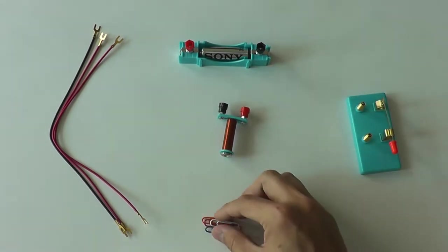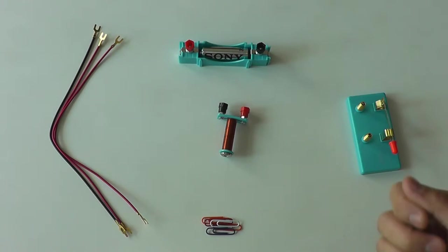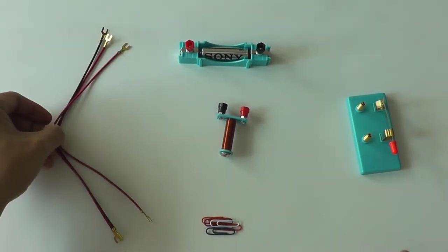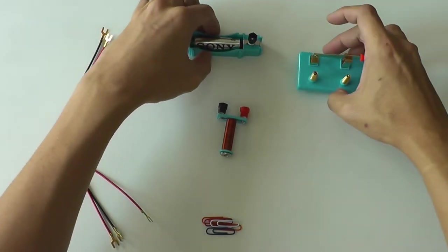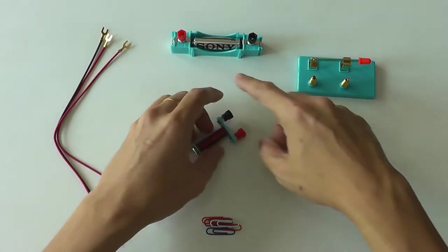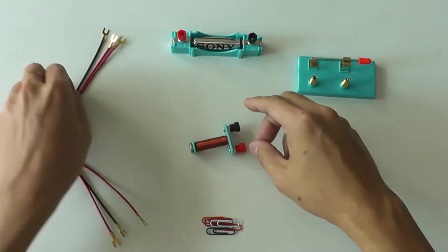And of course, I need some paper clips for the electromagnet to attract and also some wires. So now what I need to do is just to connect the apparatus in series using the wire.